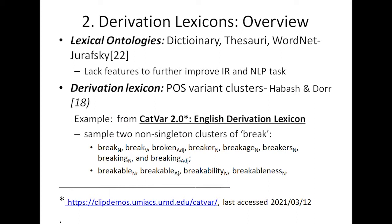Regarding derivation lexicons, lexical ontologies generally include dictionaries, thesauri, and ordinates. Due to certain IR and NLP tasks calling for additional resources, derivation lexicons have emerged, which are not as common as dictionaries and thesauri. Derivation lexicons are essentially part-of-speech variant clusters brought together. An example is the English derivation lexicon Katawa, where typing a word like 'break' yields about 39 clusters, from which two multi-member clusters are shown as examples.